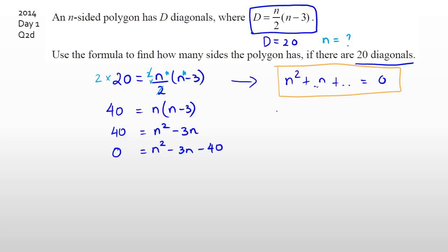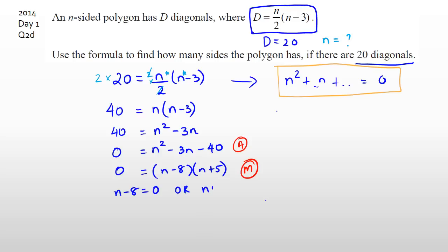This is starting to look like something you can actually factorize. You need two numbers that multiply to minus 40 and add to minus 3 — that's minus 8 and plus 5. So you get (N minus 8)(N plus 5) equals zero. Getting to this factorized stage gets you a merit. Setting each factor to zero: N minus 8 equals 0 gives N equals 8, and N plus 5 equals 0 gives N equals negative 5.